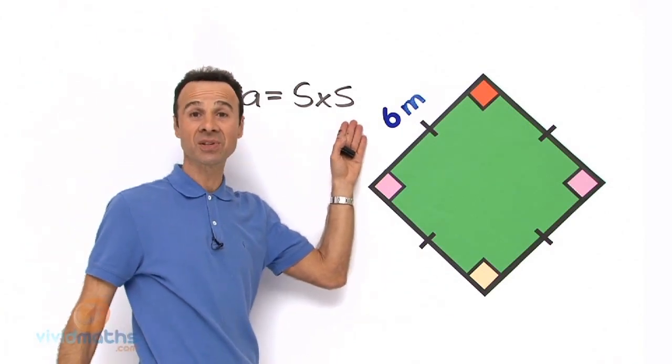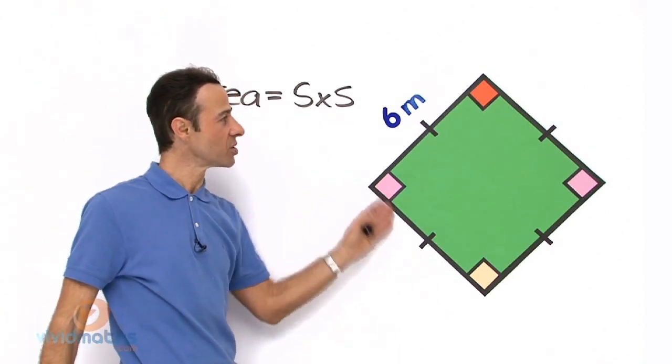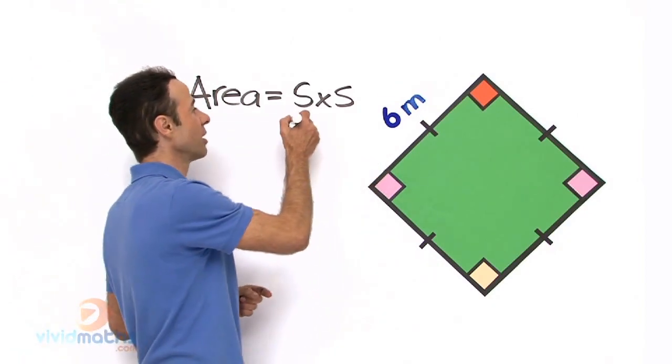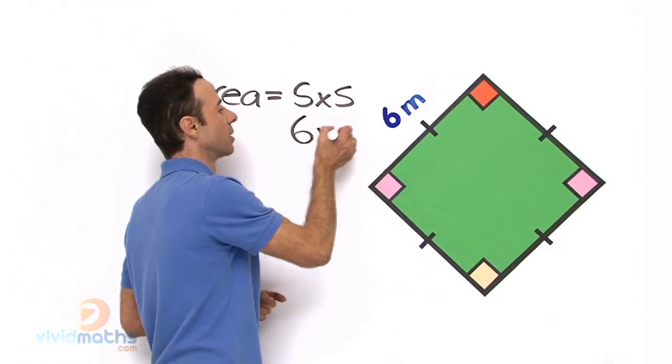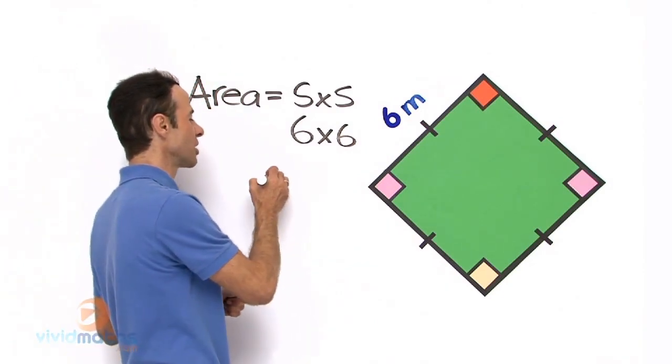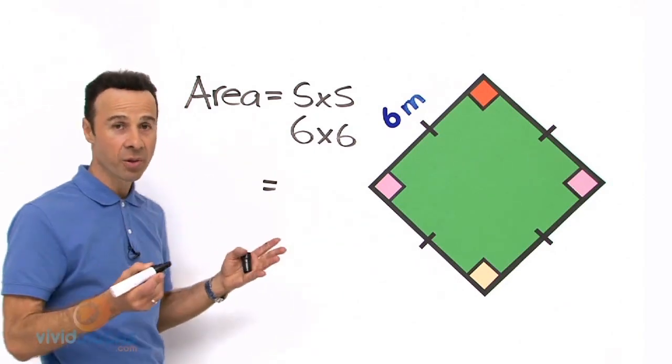So same size times same size. So we got the size here, we know each one is 6 meters, so let us write it in. All we do is multiply those and we get the answer, so 6 times 6 equals 36.